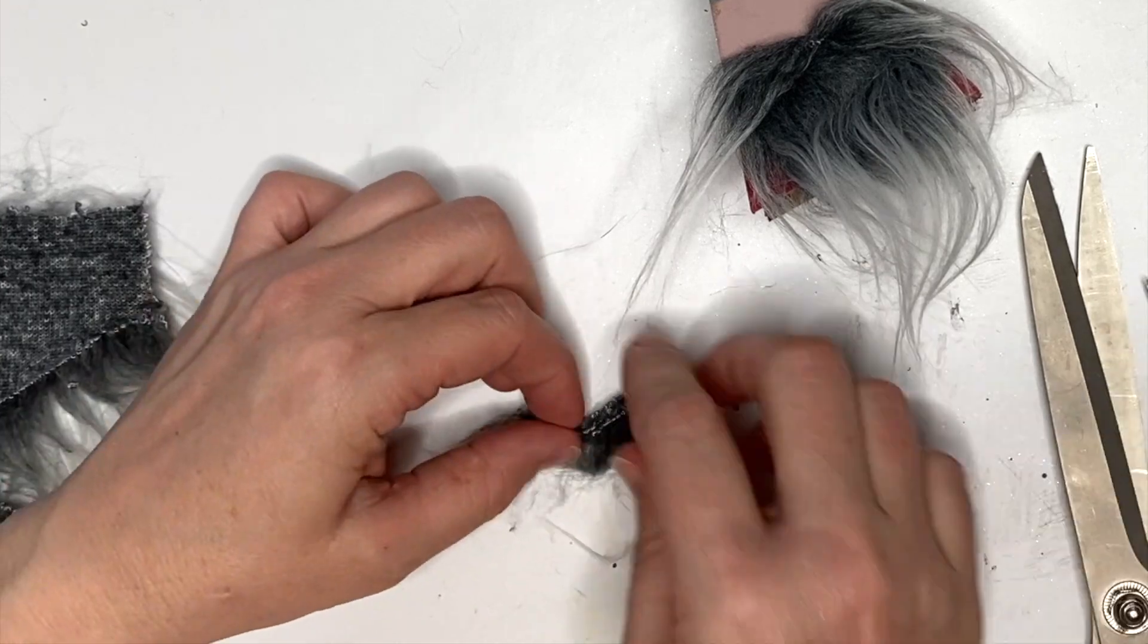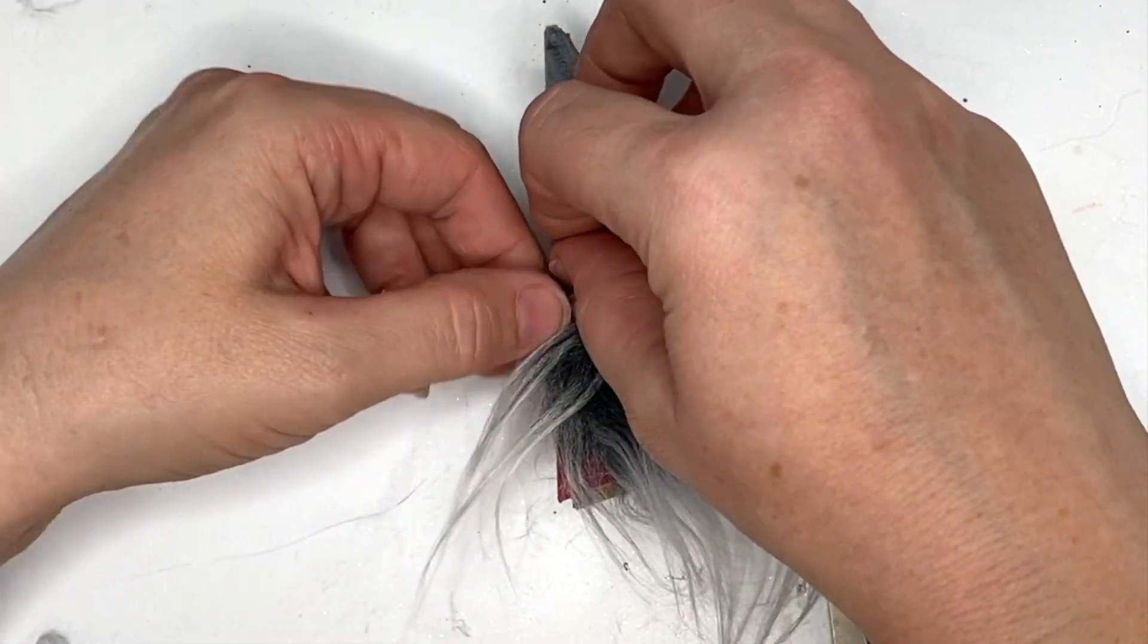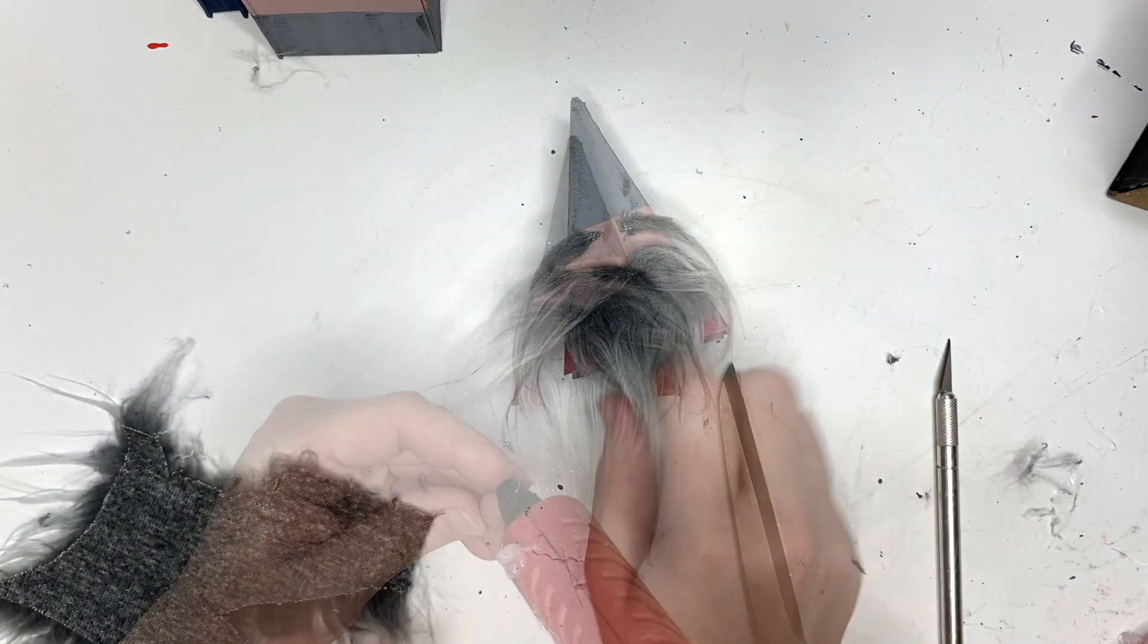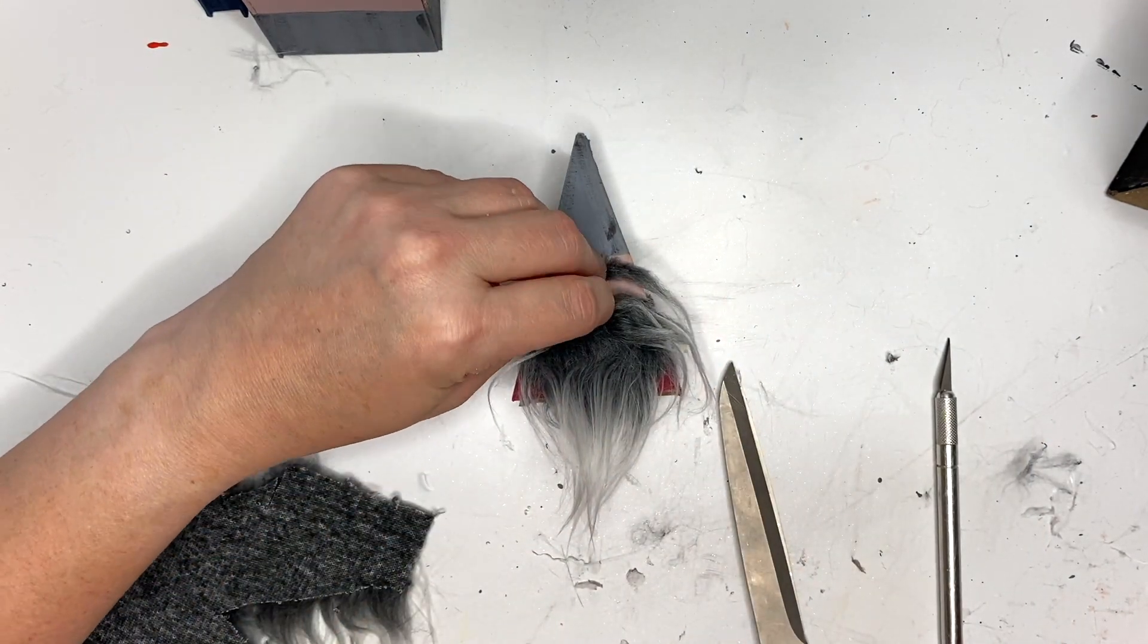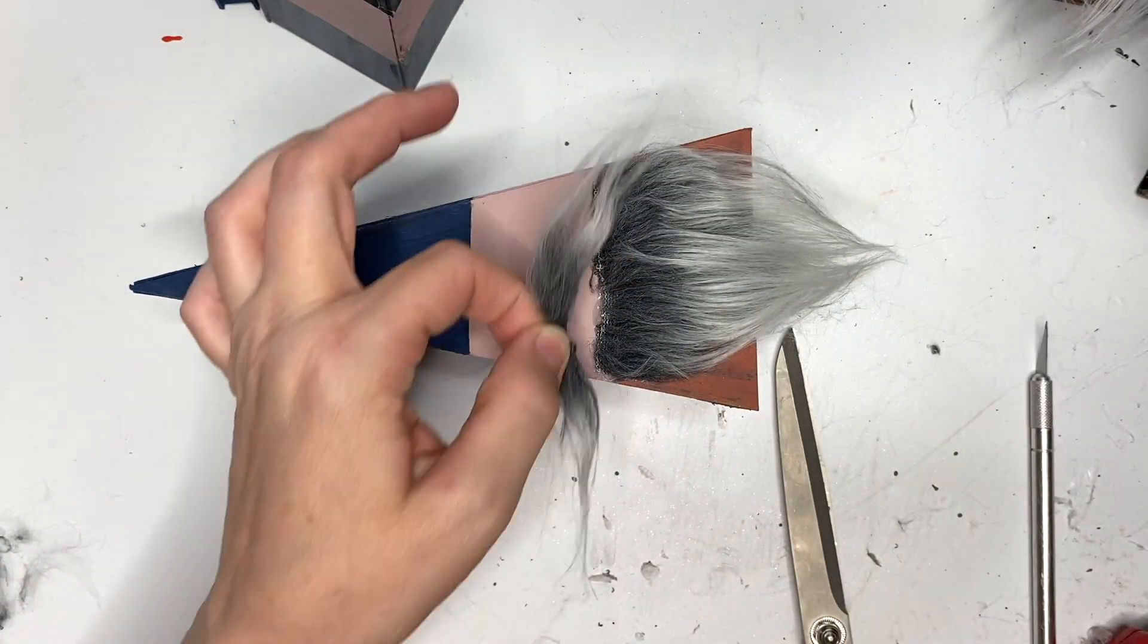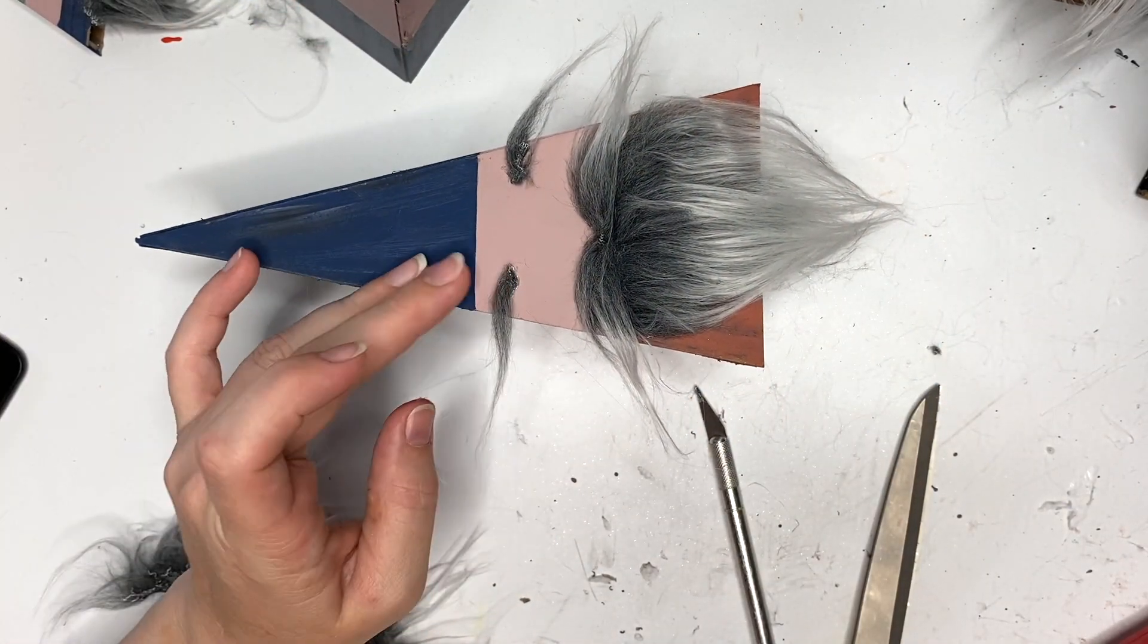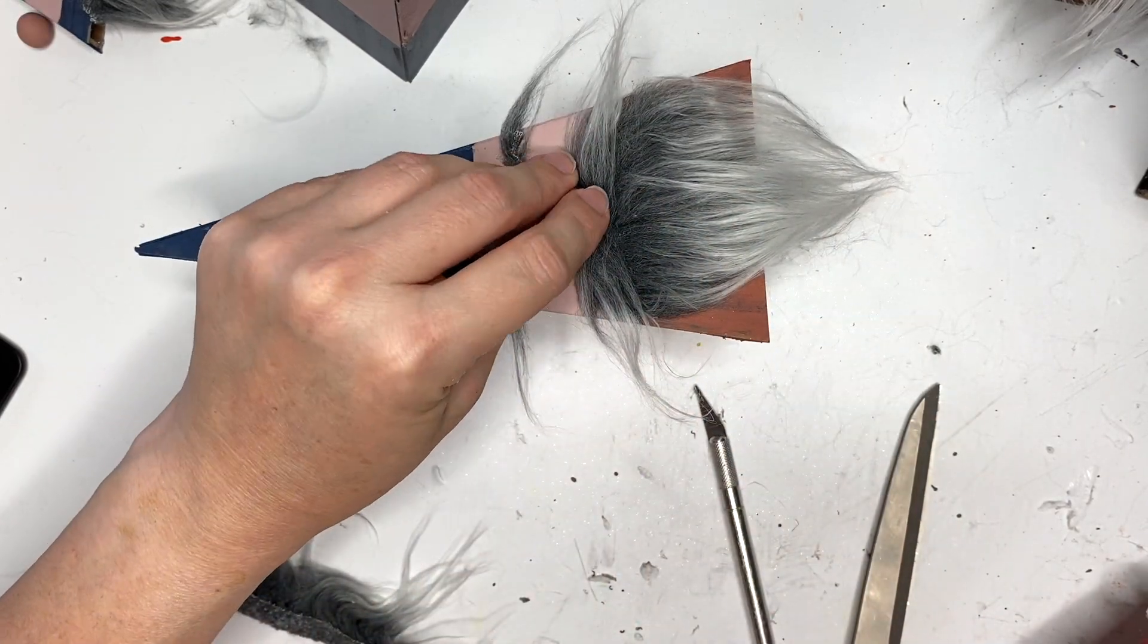Now for the eyebrows, these are all going to vary in size based on how bushy you want and the size of your gnome, but we're just going to cut teeny tiny little rectangles for the eyebrows. And then we're just going to add our little nose and then do this a lot more times. This is it. It's just repetitive, but it goes very, very quickly once the pieces are cut.